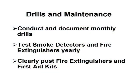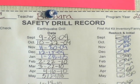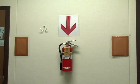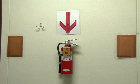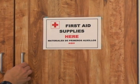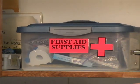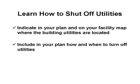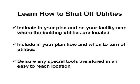Drills and maintenance: you will want to conduct and document monthly drills. Test your smoke detectors and fire extinguishers yearly. Clearly post fire extinguishers and first aid kits. Make sure you and your staff know how to shut off the utilities, and include in your plan how and when to turn off utilities. Be sure any special tools are stored in an easy-to-reach location.